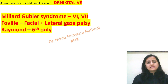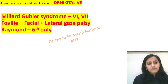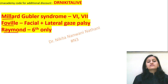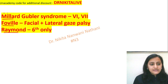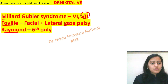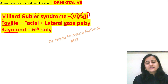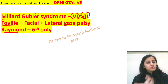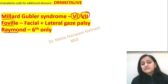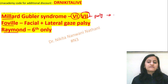For the mnemonics of the three major pontine syndromes — Millard-Gubler, Foville, and Raymond — the sixth and seventh cranial nerves are key. For Millard-Gubler, just count the letters: 'Millard' has seven letters and 'Gubler' has six. Two words, two cranial nerves affected: sixth and seventh nerve palsy. These cranial nerve palsies are ipsilateral.